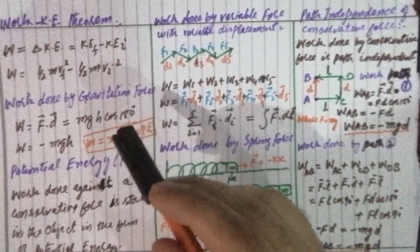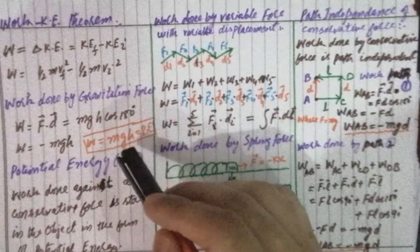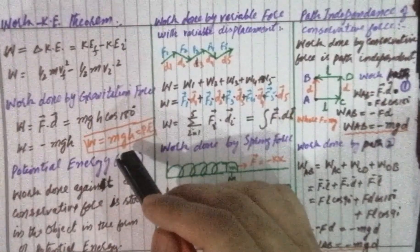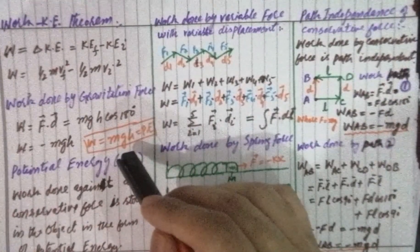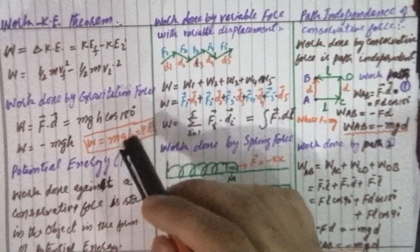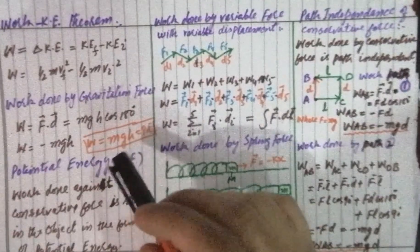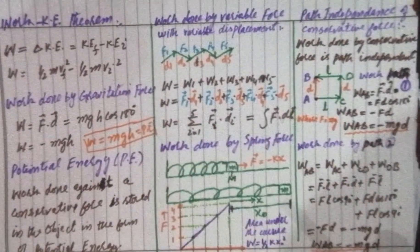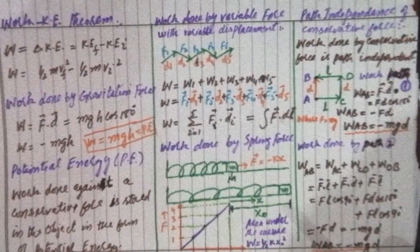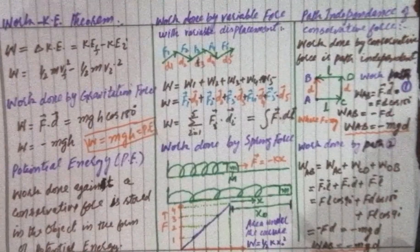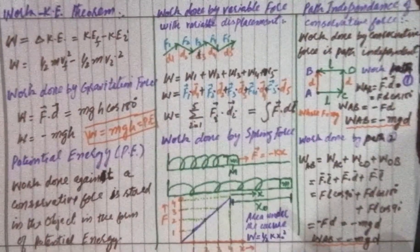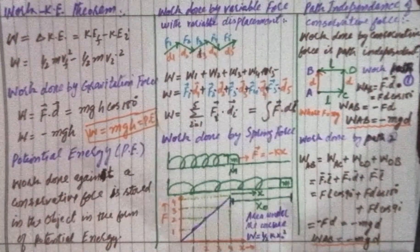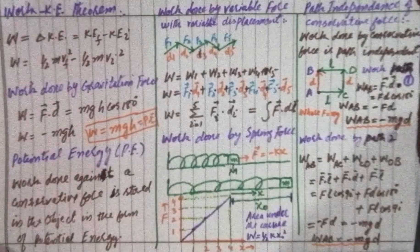So potential energy is the work done against the conservative force. To calculate the potential energy of any object, we find the work done against the conservative force.